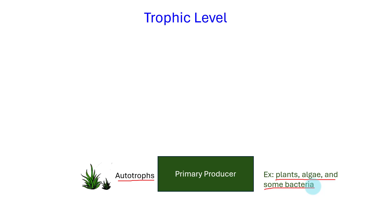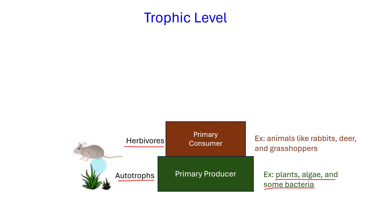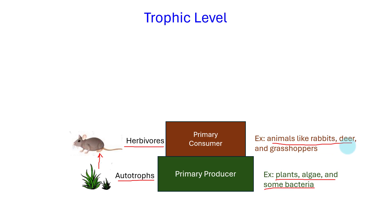Above the primary producers are the primary consumers, which are herbivores that feed directly on the primary producers to obtain their energy. They consume plant material and convert it into their own biomass. Examples of primary consumers include animals like rabbits, deer, and grasshoppers.